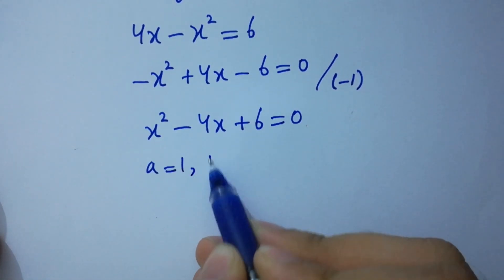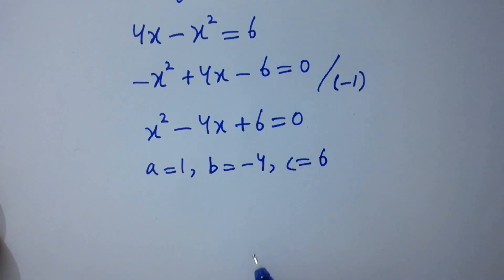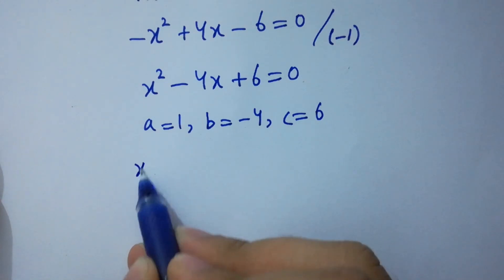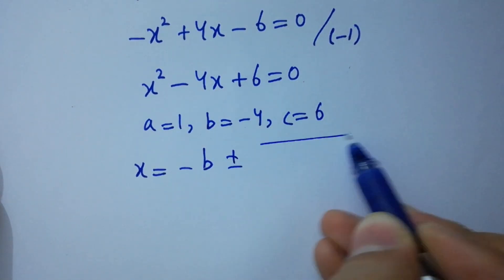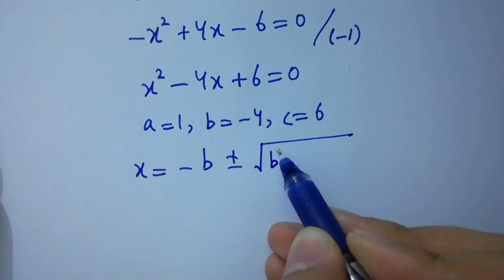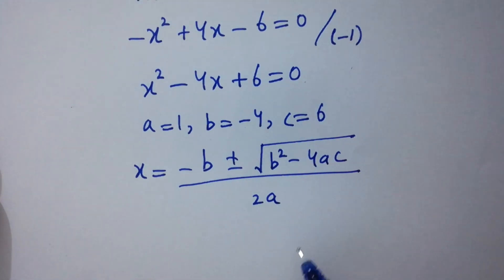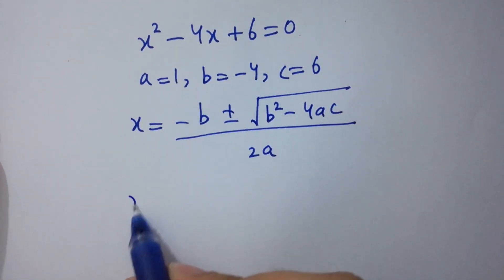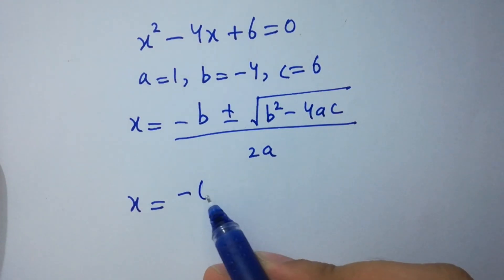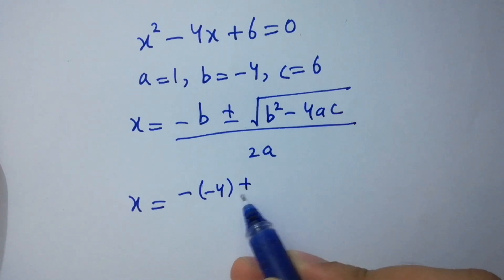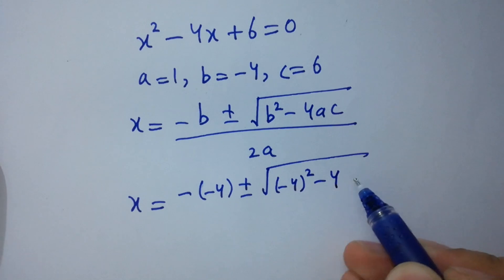Here a equals 1, b equals minus 4, c equals 6. Applying the quadratic formula: x equals minus b plus or minus square root of (b squared minus 4ac) over 2a. Substituting the values: x equals minus(minus 4) plus or minus square root of ((minus 4) squared minus 4 times 1 times 6) over 2 times 1.